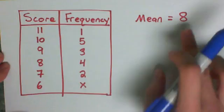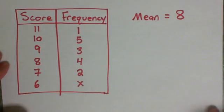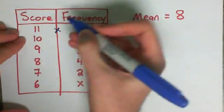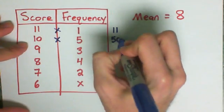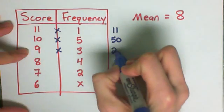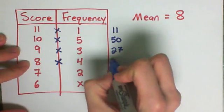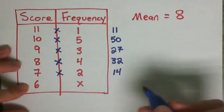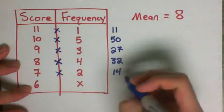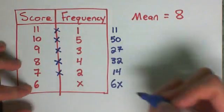So what I'm going to do is write out a formula and then solve it. So our first step is we multiply these out. 11 times 1 is 11. 5 times 10 is 50. 9 times 3 is 27. 8 times 4 is 32. And 7 times 2 is 14. And then lastly, 6 times x is 6x.